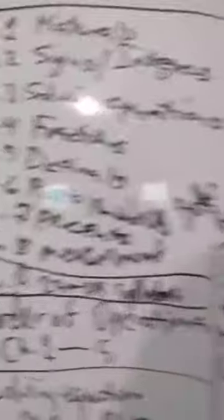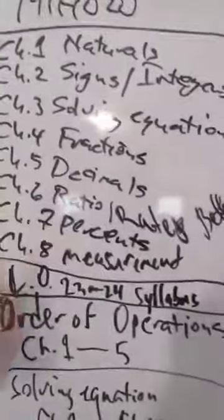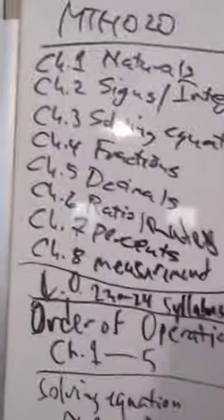Chapter 5 was decimals. We did all the operations on that. Add, subtract, multiply, and divide decimals. Word problems with decimals, and order of operations with decimals. Solving equations for x with decimals.